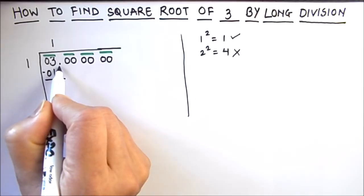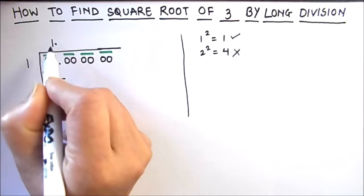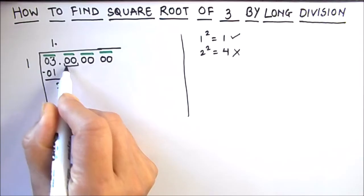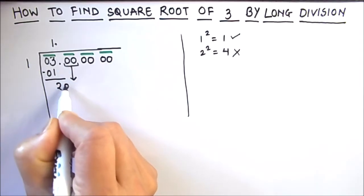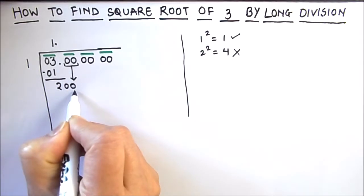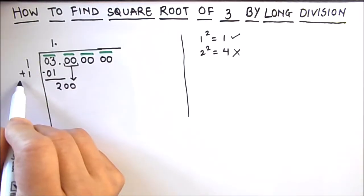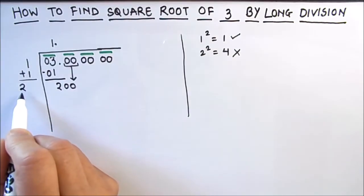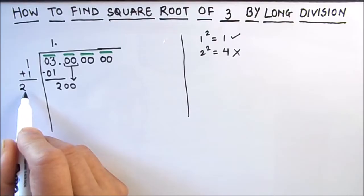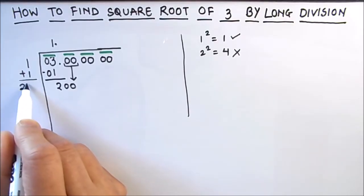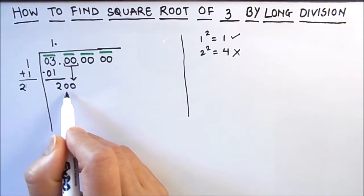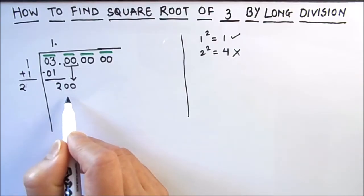Then we have a decimal point, so we will put a decimal point in the quotient and drop down the next pair of numbers, which is 00. So our next dividend is 200. For the divisor, we add the same number 1, giving us the new divisor digit 2. We need to annex a digit to this divisor — annex means to add in front of the number such a digit whose product with itself gives a result equal to or just less than 200.